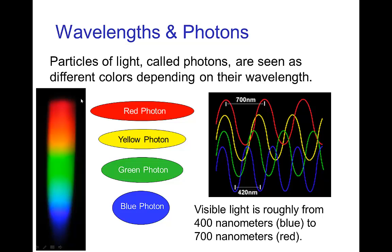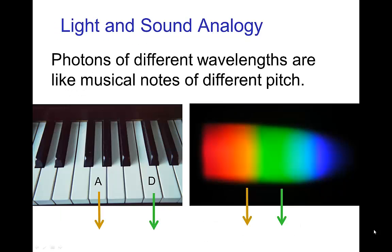For even longer photons we're in the infrared, and our eyes are not sensitive to those wavelengths. On the other side, the even shorter photons are in the ultraviolet, and we're not sensitive to those either. This association of wavelength with different colors of photons is somewhat analogous to sound and different notes — we hear notes of different frequencies and we see photons of different wavelengths.